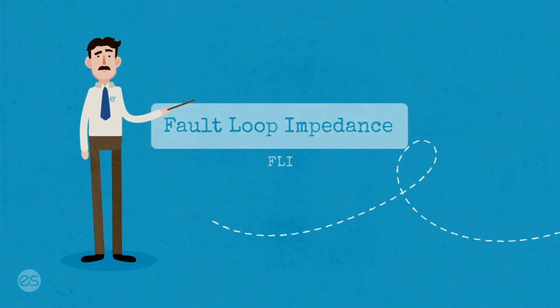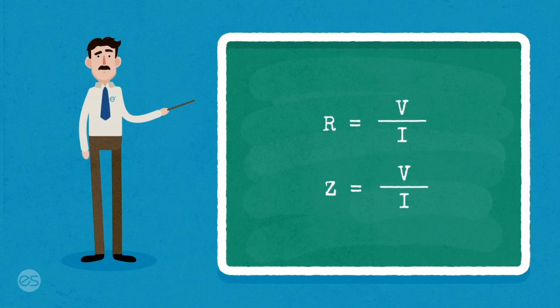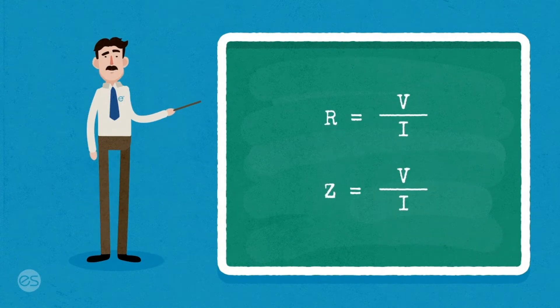What is fault loop impedance? Fault loop impedance is the opposition to fault current found in an electrical installation.